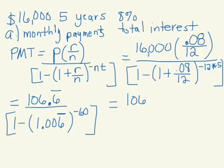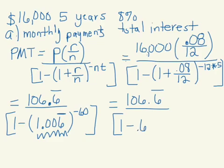Your numerator, 106.6 repeated, divided by - you are going to take 1.006 repeated, raise that to the negative 60th power. And you should end up with 1.6712. Once again, you don't want to round, you want to keep all of those values on your screen.